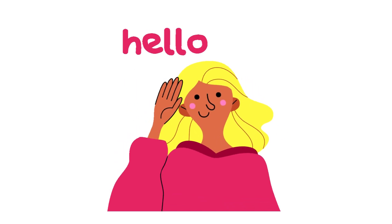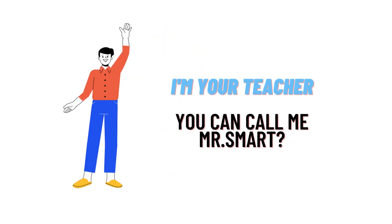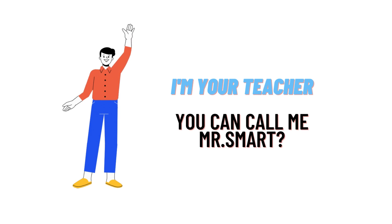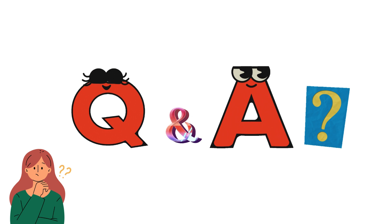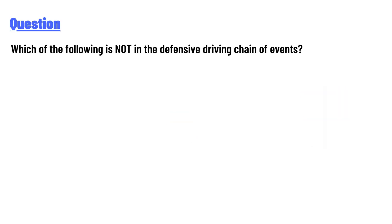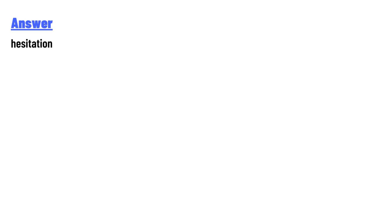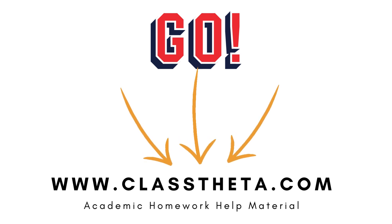Hello everyone, I am Akrash, your teacher. Welcome to class twitter.com. Our today's question is: which of the following is not in the defensive driving chain of events? The answer is hesitation.